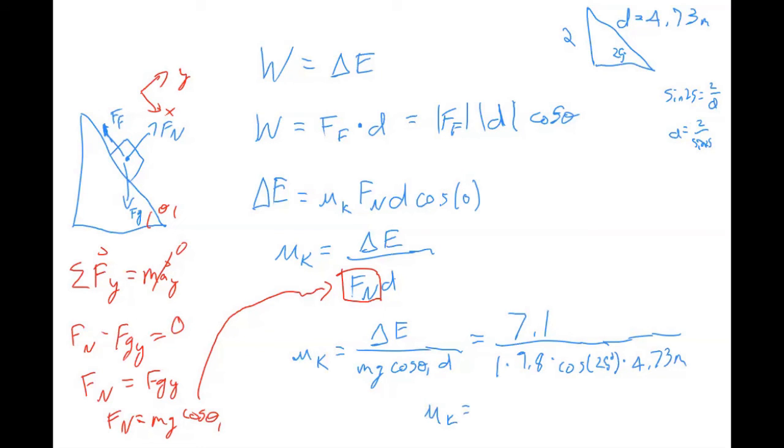And all of that work results in the coefficient, the kinetic coefficient of friction between the block and the ramp to be 0.17. And there's no units on the coefficient of friction. And if you were being careful, you would keep track of all of these units, but you would find that they all cancel.